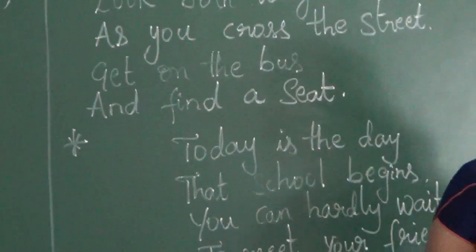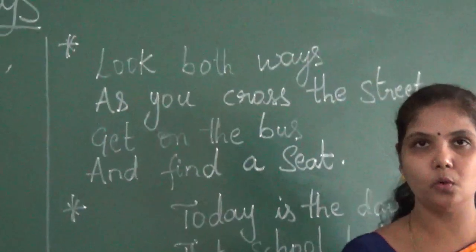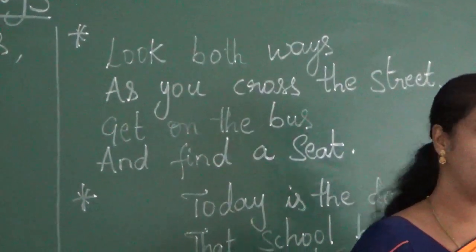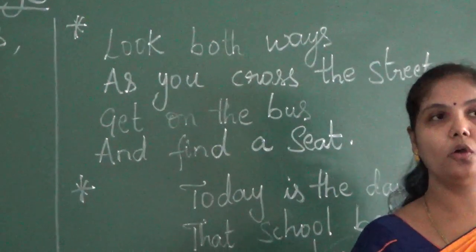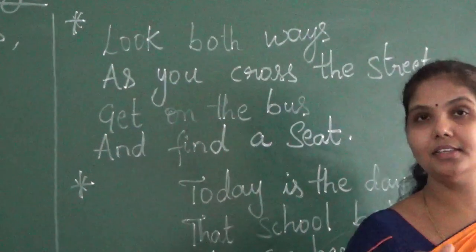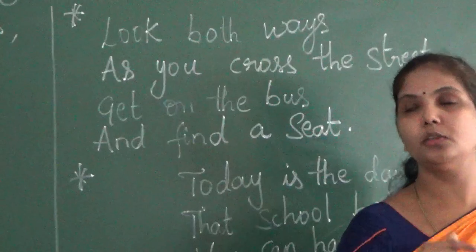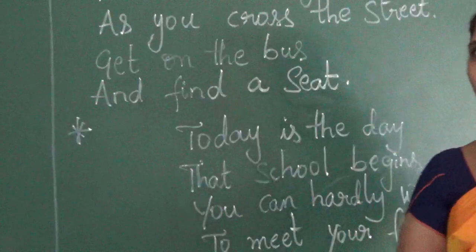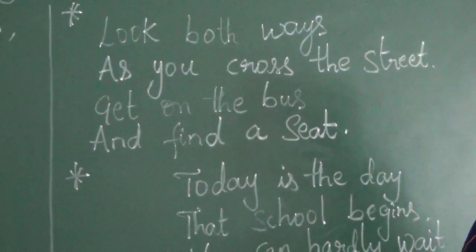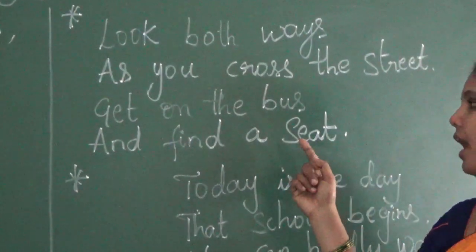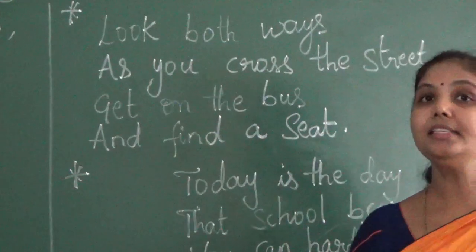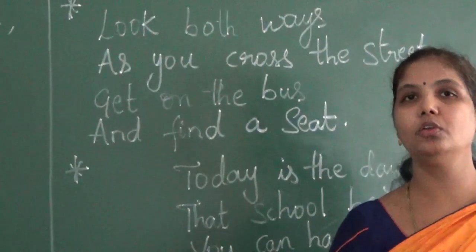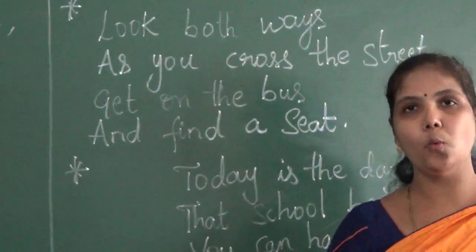What does it mean? While crossing the road you have to see both sides — to your right side and your left side. Why? Because if you are crossing the road, you have to check if any vehicle is coming. You have to see both ways. Then you should walk slowly near the bus, enter the bus, and find a seat. You should not push anyone else in the bus.